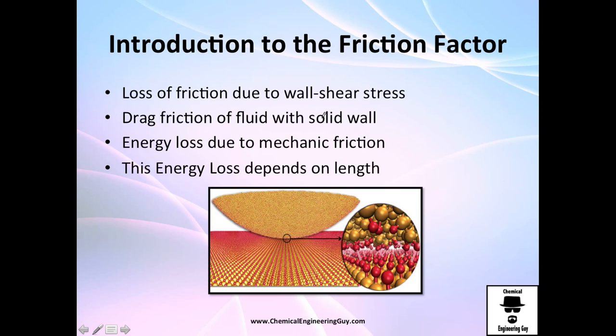Why do we get friction? We always have a loss of friction due to the wall shear stress. Anytime you have something in contact, at the molecular level you have attraction, interaction, crashes, and collisions. The drag friction of the fluid against the wall is very critical. This is mechanical friction, and it depends on the length. Friction is a trajectory concept. If you have point A and point B, and point C is far away, many times you will have more friction from A to C than A to B.